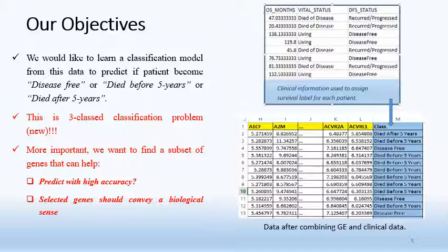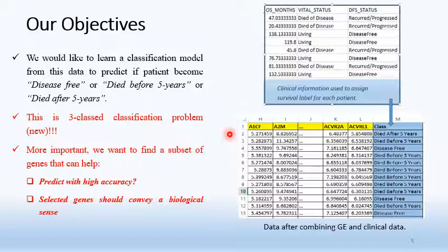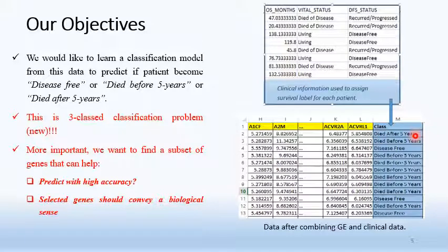From the data, we would like to learn a classification model to predict if patients become disease-free, or die before 5 years, or die after 5 years. After combining the gene expression and clinical data, we have a new dataset where each row represents the gene expression profile of a patient and each column represents one gene. The last column is the outcome of treatment.